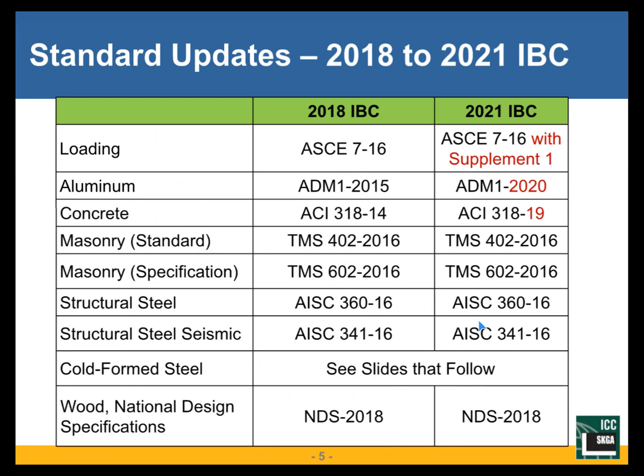When a new code edition comes out, some reference standards change and some do not. Let's take a comprehensive look at the major reference standards in the 2021 IBC versus those in the 2018 IBC. ASCE 7-16 remains unchanged as the standard itself, but Supplement Number One to ASCE 7-16 is now adopted by the 2021 IBC. The Aluminum Design Manual has also been updated.